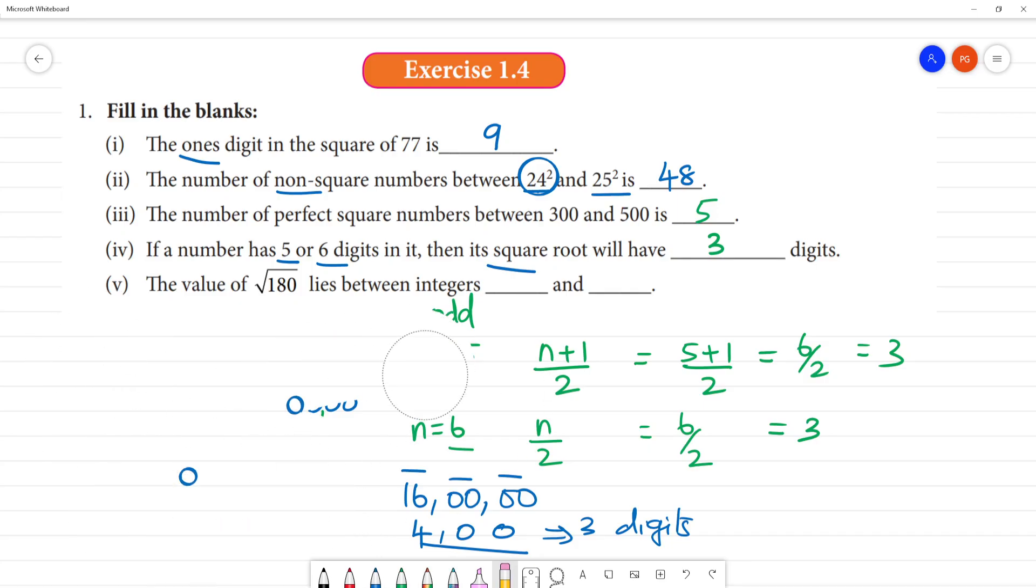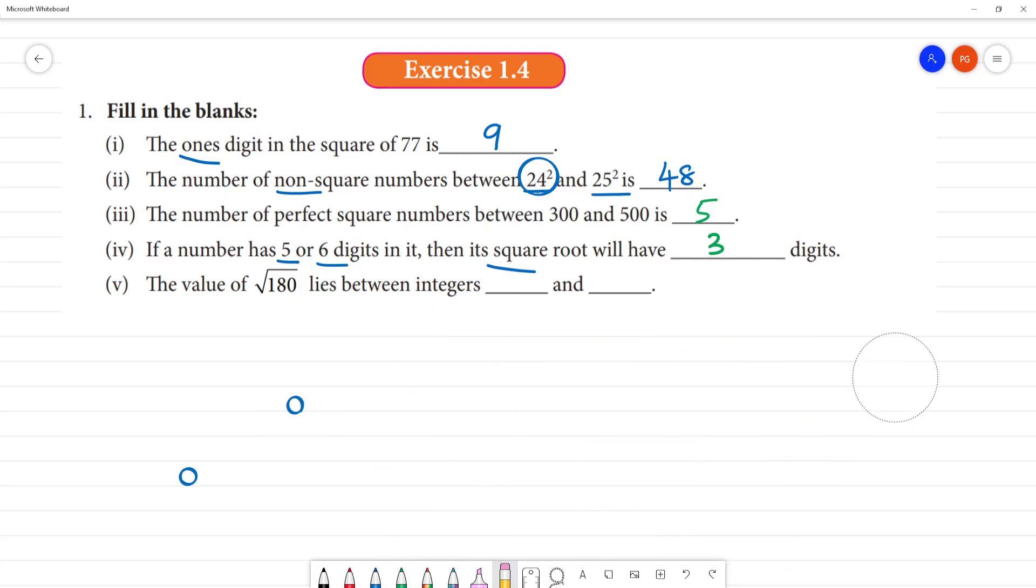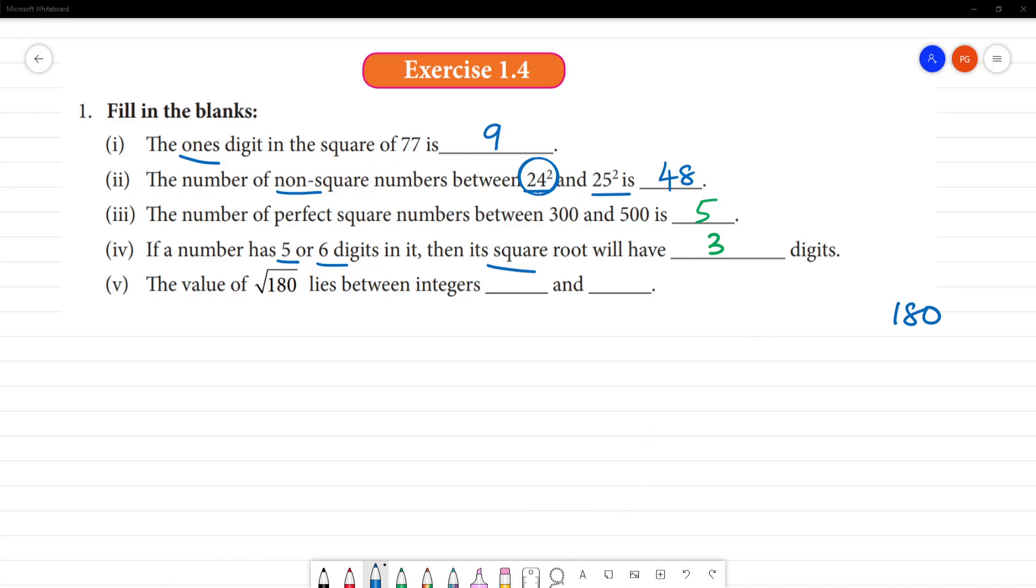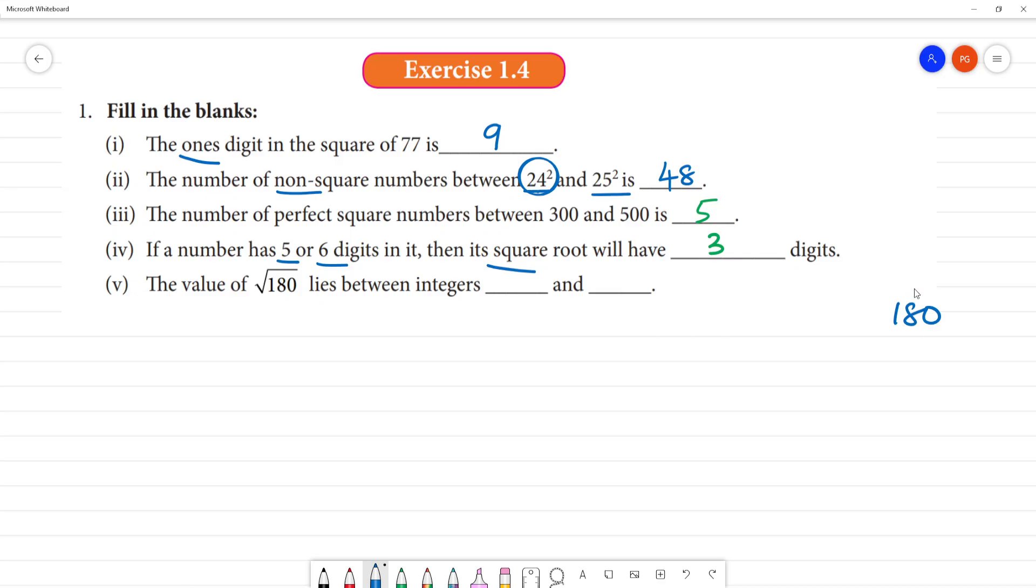Next, the value of root 180 lies between the integers dash and dash. 180, we need to find which square numbers it lies between. This is 180.